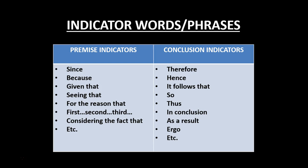By unpack the argument, I mean find the conclusion and articulate the premises one by one, which is known as standardizing the argument. Here's your list of premise indicators — these are all in your book as well: since, because, given that, seeing that, for the reason that, et cetera. Conclusion indicators: therefore, hence, it follows that, so, in conclusion, et cetera. Keep these in mind because they can help you unpack and then standardize the argument, which is the goal of this lecturette.